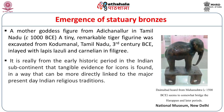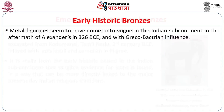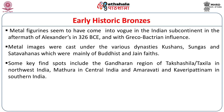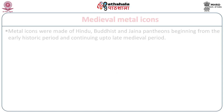It is really from the early historic period in the Indian subcontinent that tangible evidence for icons is found in a way that can be linked more directly to the major present-day Indian religious traditions. Metal figurines seem to have come into vogue in the aftermath of Alexander's incursions in 326 BCE, and there is a marked Greco-Bactrian influence in early iconography. Metal images were cast under the various dynasties of the Kushans, Sungas, and Shatavahanas, mainly of Buddhist and Jain faiths. Key findspots include the Gandharan region of Takshashila in North-West India, Mathura in Central India, Amravati in Andhra Pradesh, Nagarjuna Konda, and Kaveri Pattinam in Tamil Nadu.